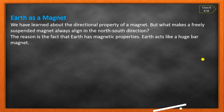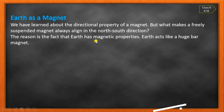Earth as a magnet: yes, the Earth is a magnet. We have discussed the directional property — a freely suspended magnet always aligns in the North-South direction. The reason is that the Earth has a magnetic property and acts as a huge bar magnet.